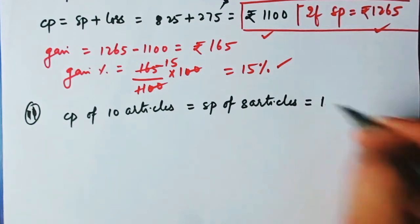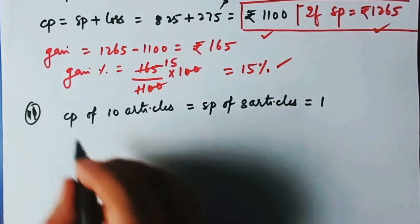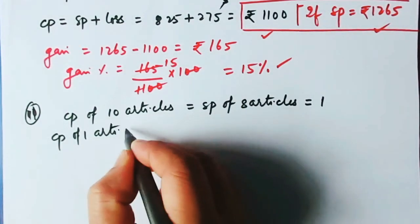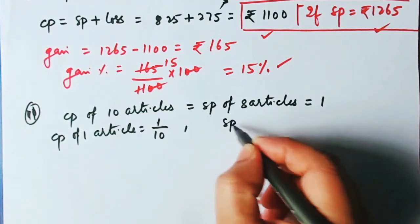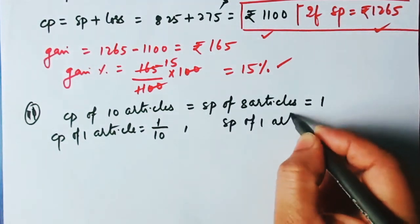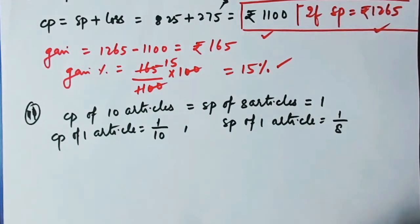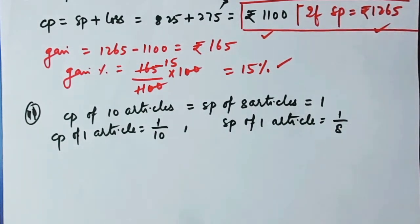In the next problem, the cost price of 10 articles equals the selling price of 8 articles. No price is given, so let the total equal 1. Therefore CP of one article = 1/10 and SP of one article = 1/8.